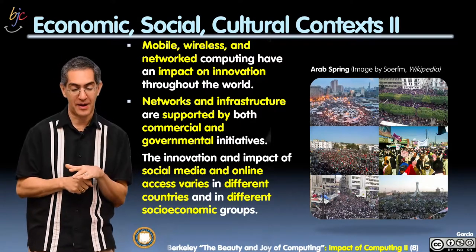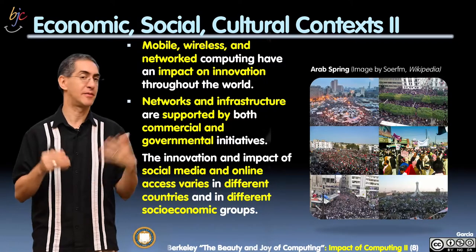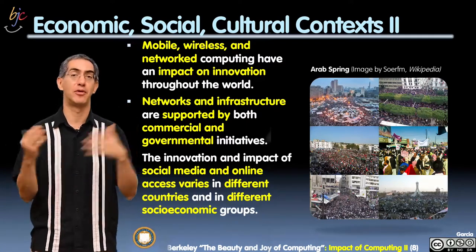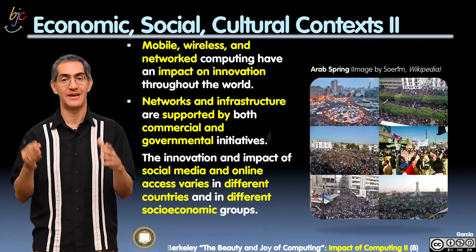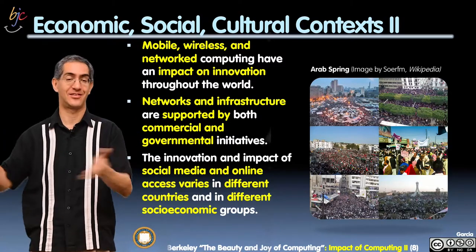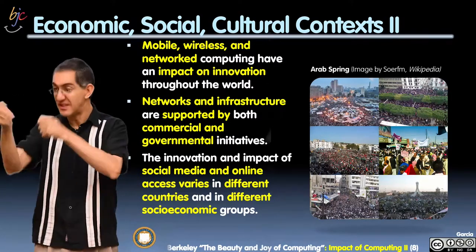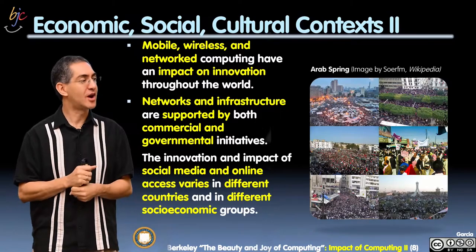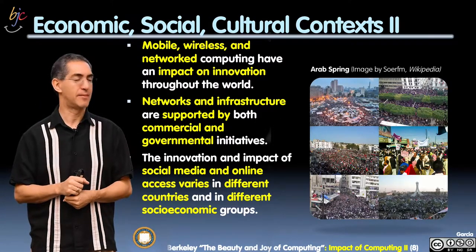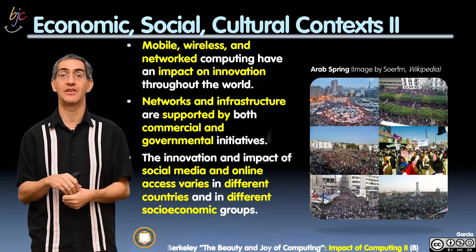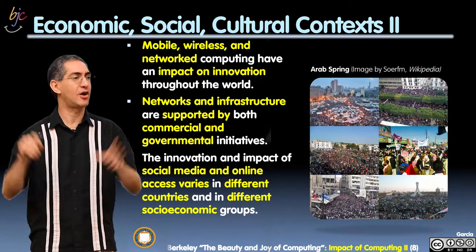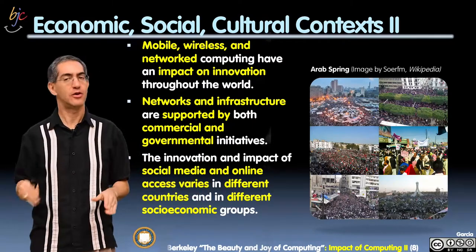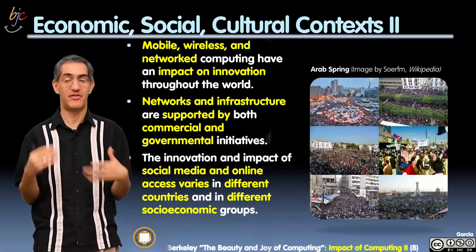Networks and infrastructure are supported by commercial and government initiatives. Examples include Google giving free Wi-Fi to whole cities, and Google Fiber bringing cheap, fast broadband to cities like Kansas City and Austin, Texas. However, the government also controls a lot of this — in many countries, the government has shut off the internet entirely, saying they don't want information getting out. So you realize you're kind of in the hands of the folks who are running your systems.